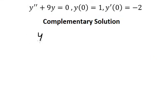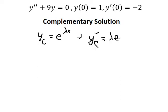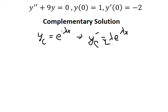I will put yc equal to e to the power of lambda x. So if we do the first derivative, we have lambda e to the power of lambda x. Because when we do the first derivative, we keep this term and then do the first derivative of the exponent, that's why we have lambda.